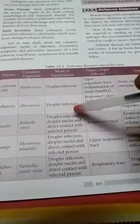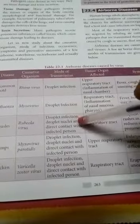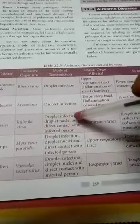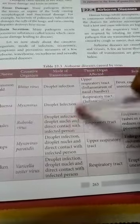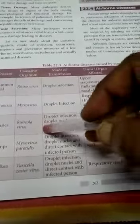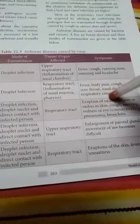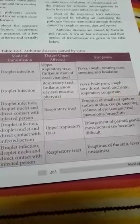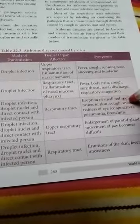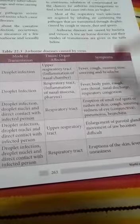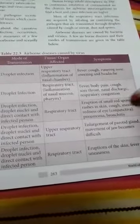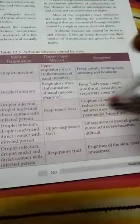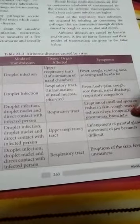Measles is caused by the rubella virus. It spreads through droplet infection, droplet nuclei, and direct contact with an infected person. It affects the skin and respiratory tract.